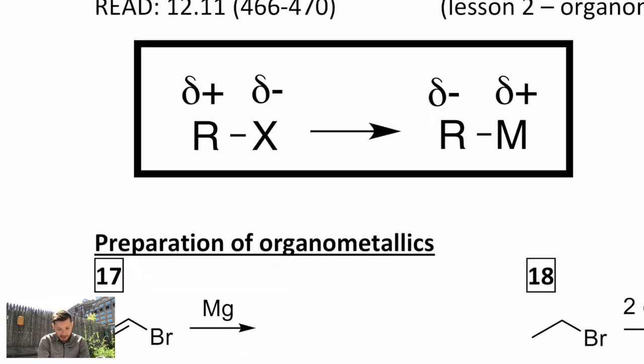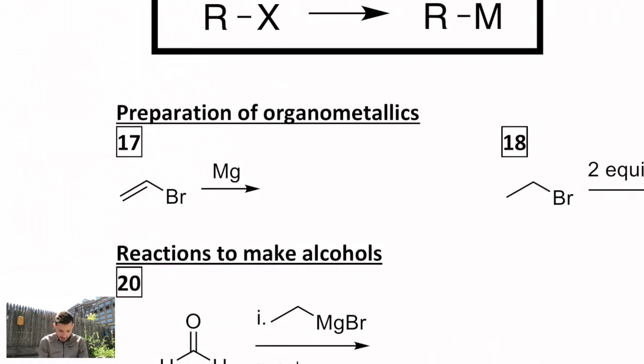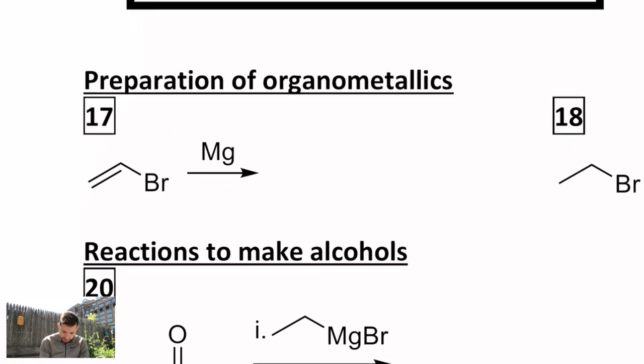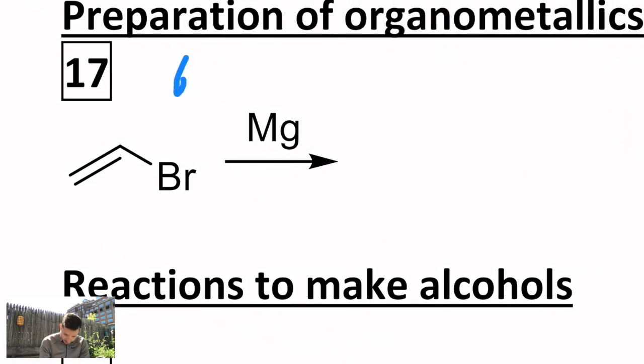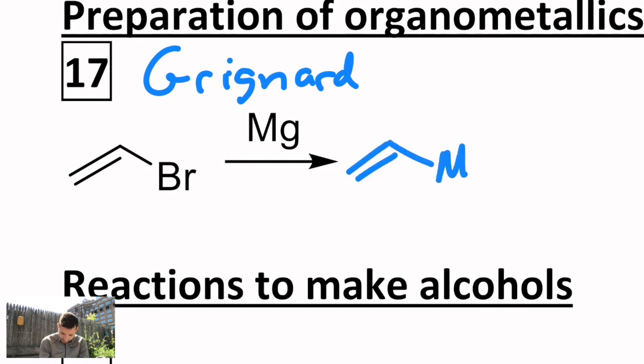There are three types of organometallics that we're going to see a lot. They are the Grignard reagent, the organomagnesium reagent, named after a chemist. You start with a halide, and you insert elemental magnesium in between the carbon bromine bond. I won't go into how this happens. It's called an oxidative addition.